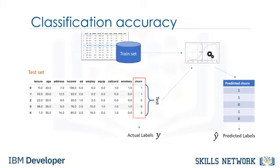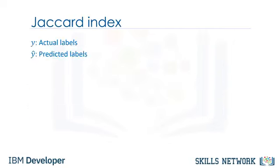There are different model evaluation metrics, but we just talk about three of them here. Specifically, Jaccard index, F1 score, and log loss. Let's first look at one of the simplest accuracy measurements, the Jaccard index, also known as the Jaccard similarity coefficient.